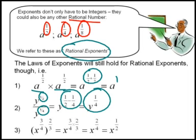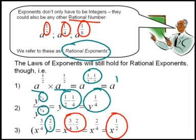That's the second exponential law. And the third exponential law: where you have x to the power of 3 over 4 inside a bracket, to the power of 2 over 3 outside the bracket, you multiply the exponents with each other. You'll get x to the power of 6 over 12, which simplifies to x to the power of a half.